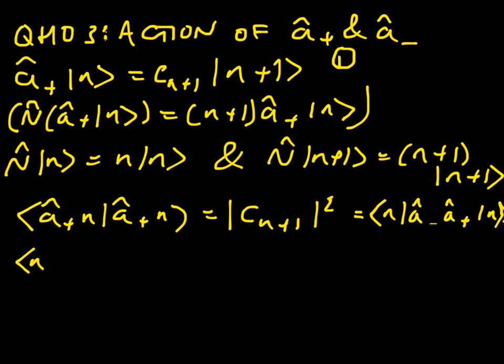So we see that we have bra N, A plus A minus plus 1, ket N is equal to the square modulus of C N plus 1.